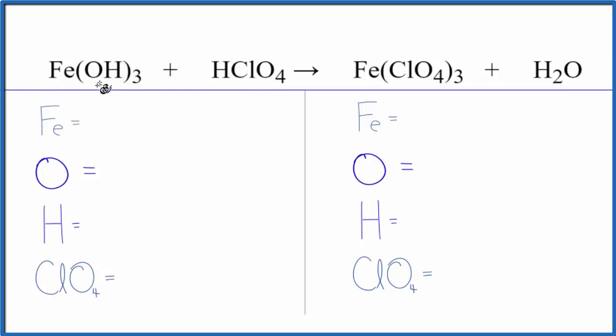We have our base, iron(III) hydroxide, and our acid, perchloric acid. We'll use a bit of a trick to make this easier to balance. This is kind of a challenging equation. So let's count the atoms up and I'll show you how we do that.